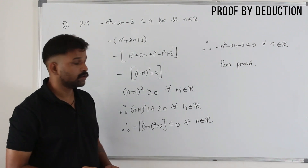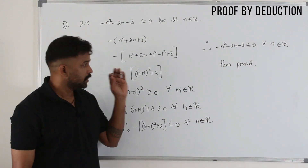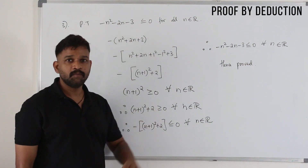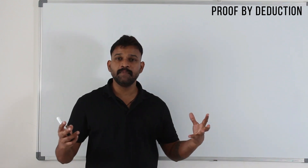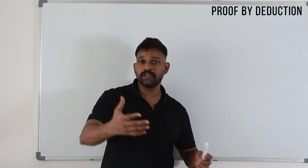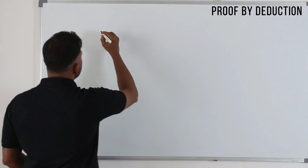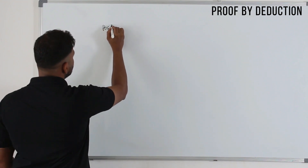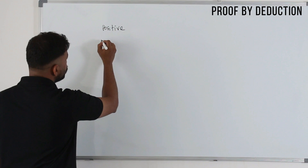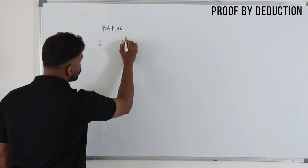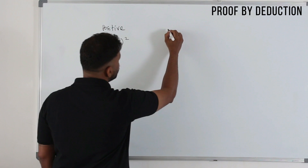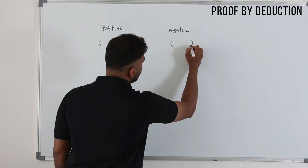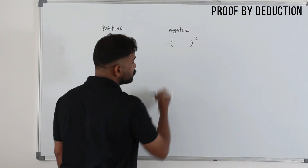Remember, you cannot take a particular number, substitute it in, and prove this — that's wrong and you won't get any marks. We have learned a little about proof by deduction. Whenever they want you to prove a statement is positive, you need to prove the expression can be written as a square of something. If they want you to prove it is always negative or less than 0, you need to prove it can be written as a square of something with a negative sign in front.